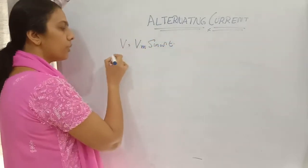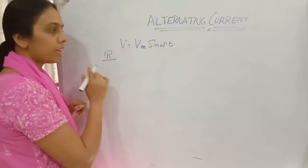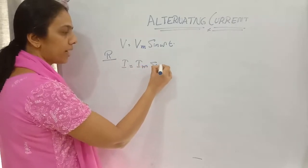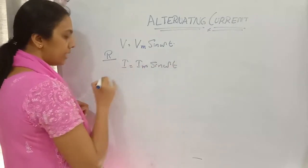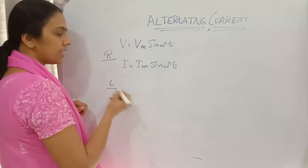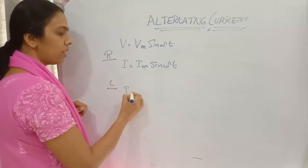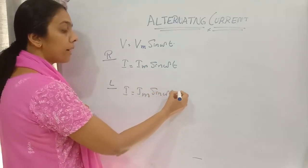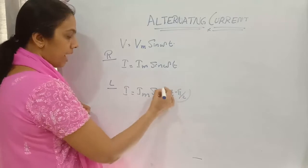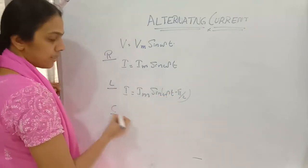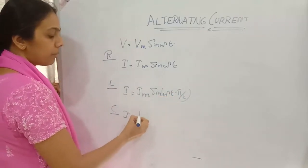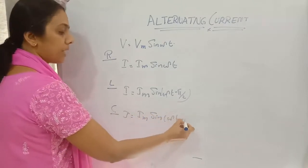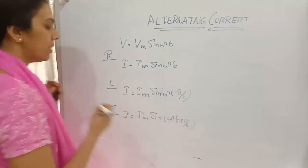For a resistive circuit, if a resistor is included, current will be equal to im sine omega t. If an inductor is used in the circuit, i is equal to im sine omega t minus pi by 2. And if a capacitor is used in the circuit, then i will be equal to im sine omega t plus pi by 2.